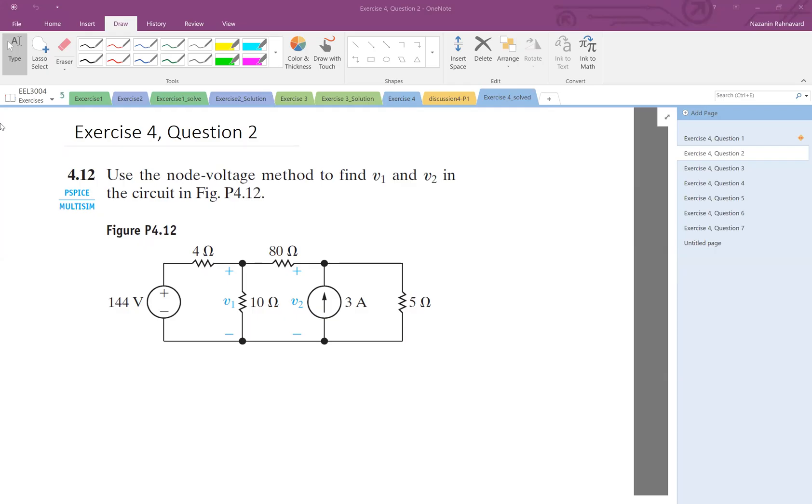Okay, again, node voltage analysis to find V1 and V2. So we find the essential nodes: one is here, one is here, and one is here, with this one as a reference.